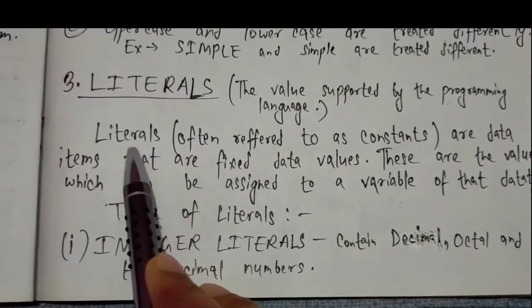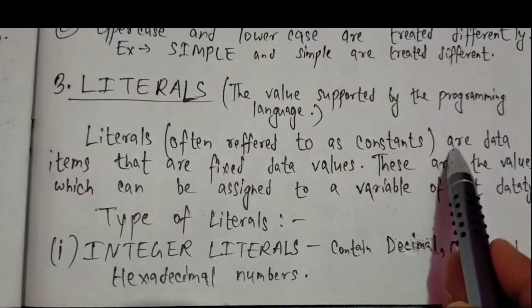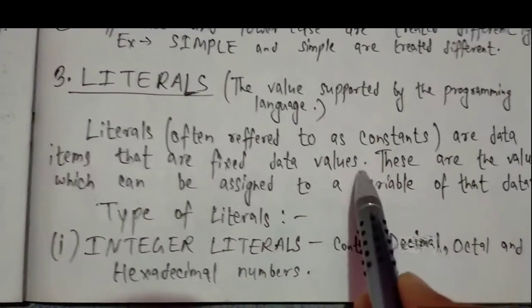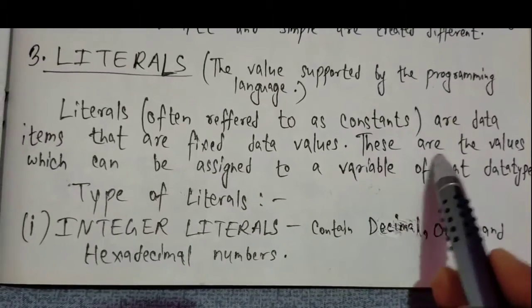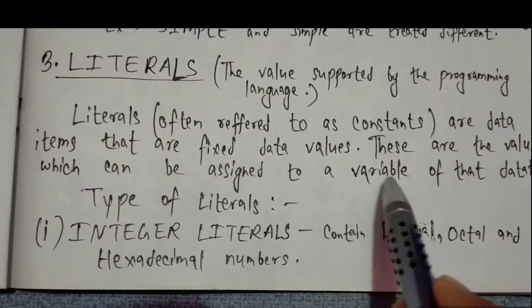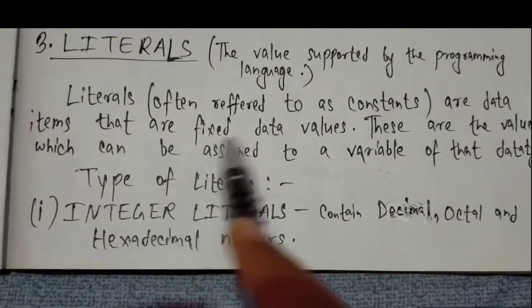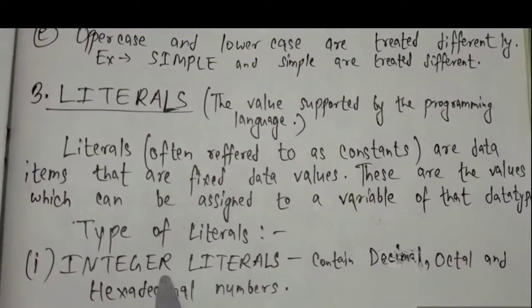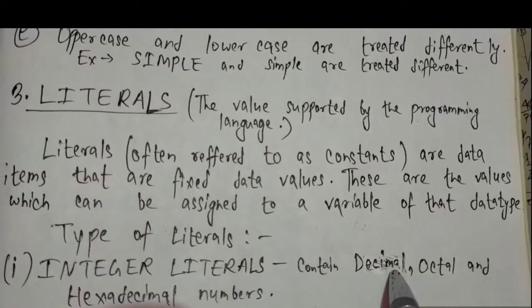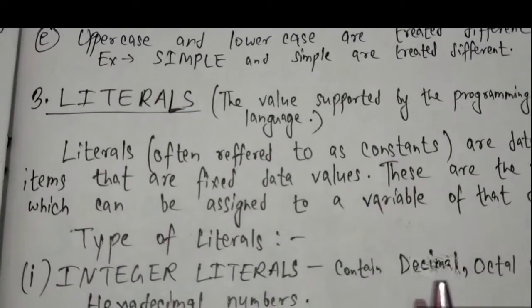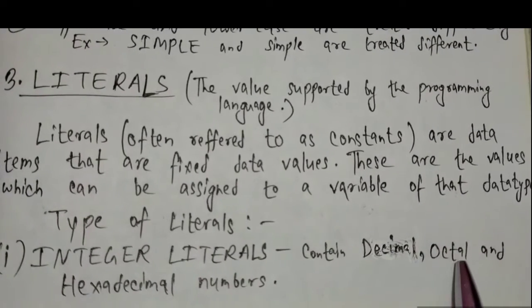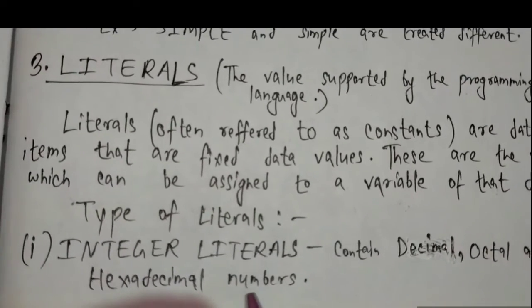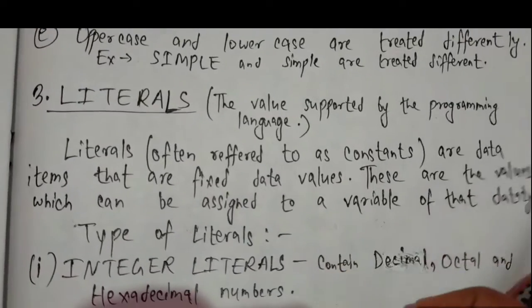Literals, often referred to as constants, are data items that are fixed values. The value of 1, 2, 3 - these are constants, values which can be assigned to a variable of that data type. First type of literal is integer literals. That means it contains decimal - all the numbers - and octal and hexadecimal. I will explain the meaning of octal and hexadecimal afterwards. These are all numbers.